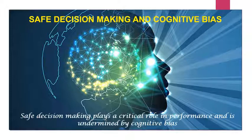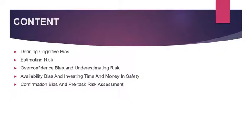As all of you know, safe decision making plays a critical role in performance, but decision making is undermined by cognitive bias. Let's quickly go through the content. We will know what cognitive bias is, how we always fail to consider baseline, and why we use mental shortcuts while estimating risk. We will also know the types of cognitive bias and try to understand them through some examples.